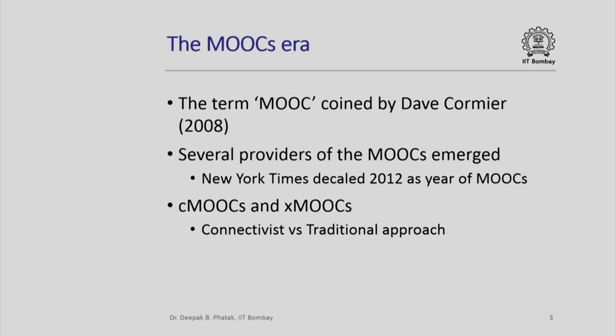In terms of the evolution of MOOCs, people tried to distinguish between two types of MOOCs: one called cMOOCs and the other called xMOOCs. xMOOCs is a name given to the traditional approach of covering courses, whereas cMOOCs relates to a notion called the connectivist approach. We will not dwell on the details of these.